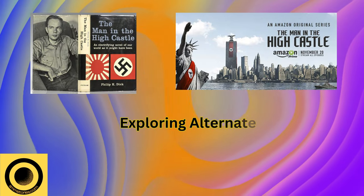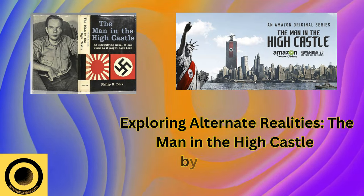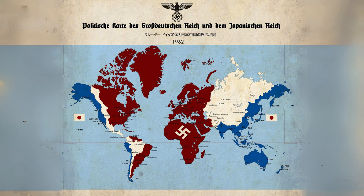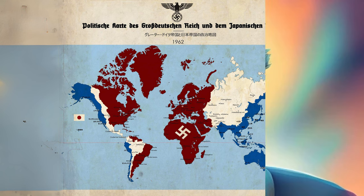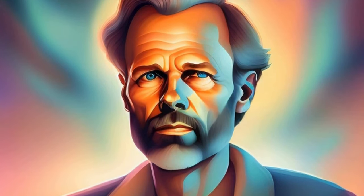Welcome to our exploration of The Man in the High Castle, the iconic alternate history novel by Philip K. Dick. Published in 1962, this novel offers a thought-provoking examination of an alternate world where the Axis powers won World War II. Philip K. Dick, an American author known for his explorations of altered realities and philosophical themes, crafted this novel as one of his most influential works.